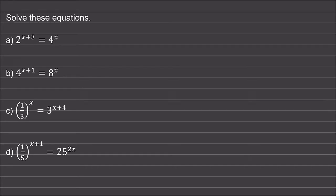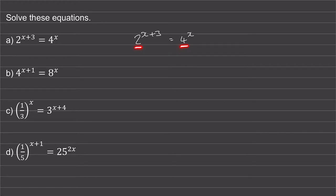In this lesson I'm going to show you how to solve equations involving powers. We'll begin with question a. We have 2 to the power of x plus 3 is equal to 4 to the power of x. We can see that we have a base of 2 on the left hand side and a base of 4 on the right hand side. To solve this equation we need the two bases to be the same.